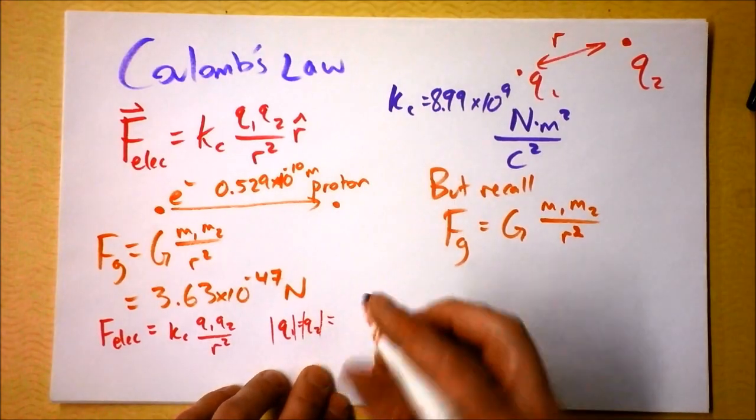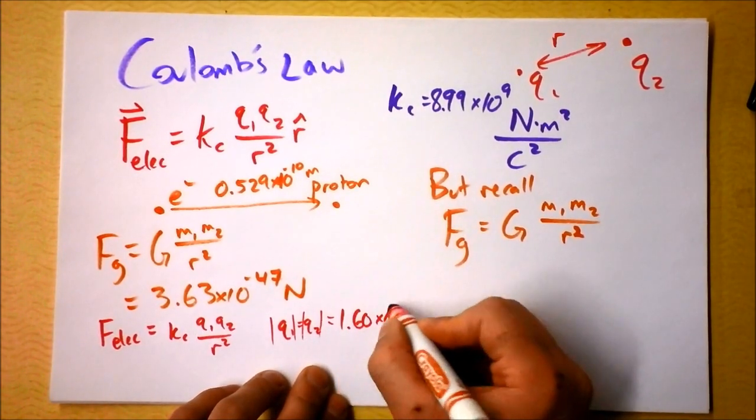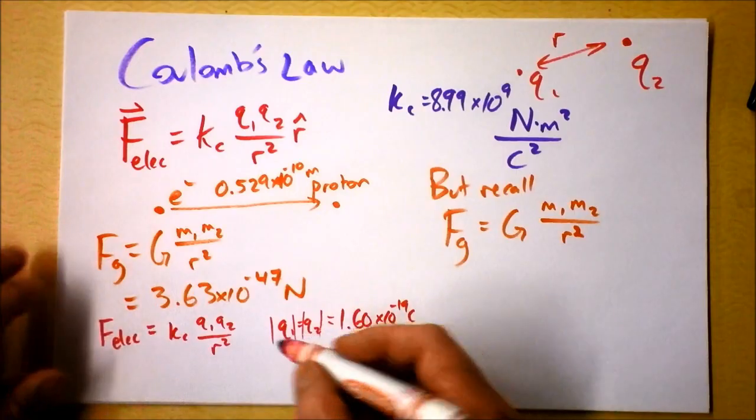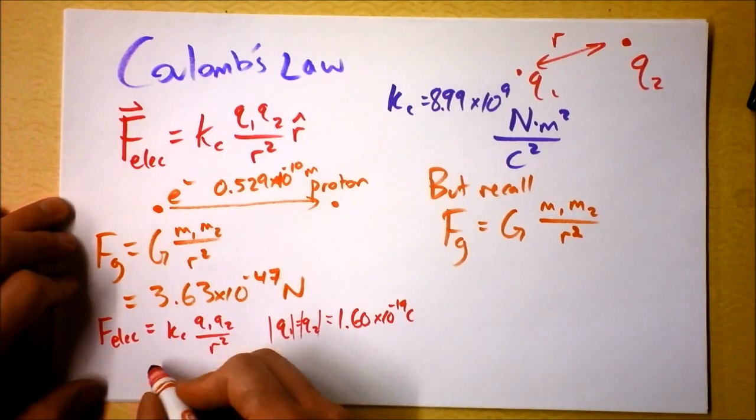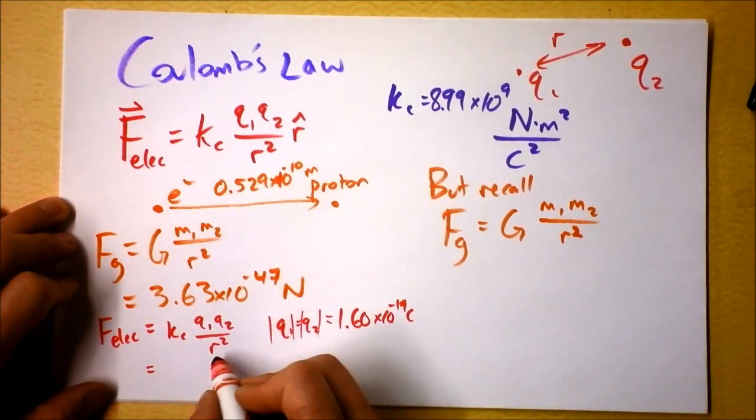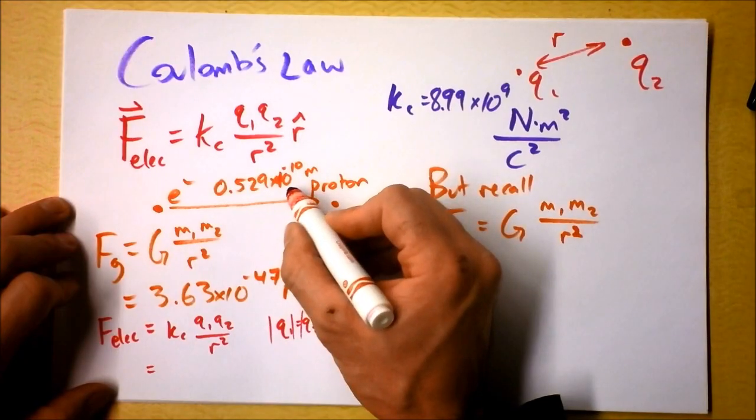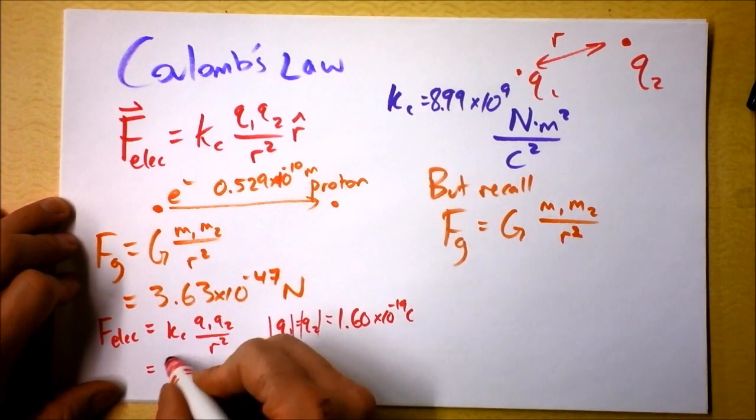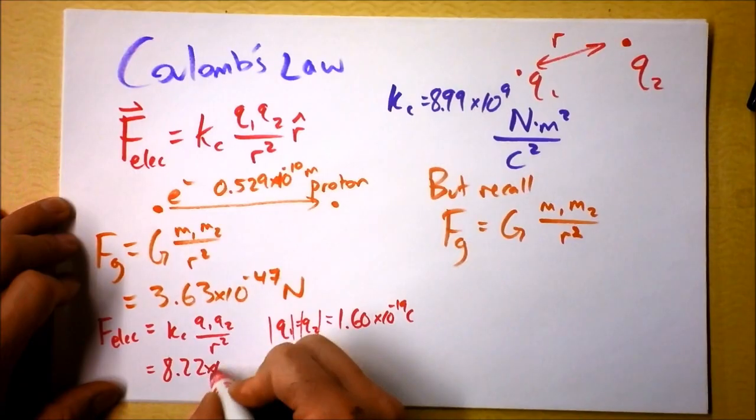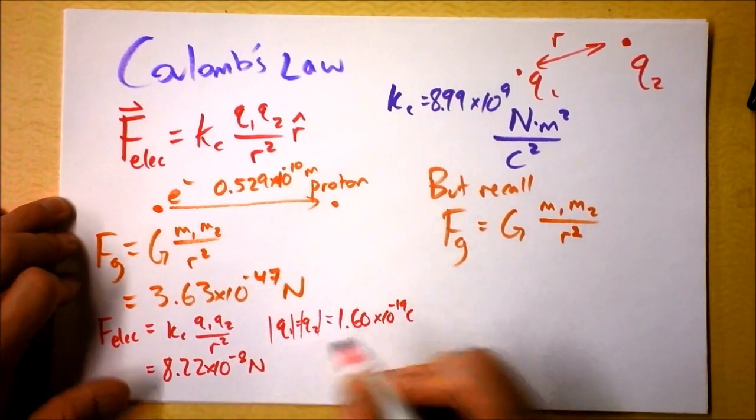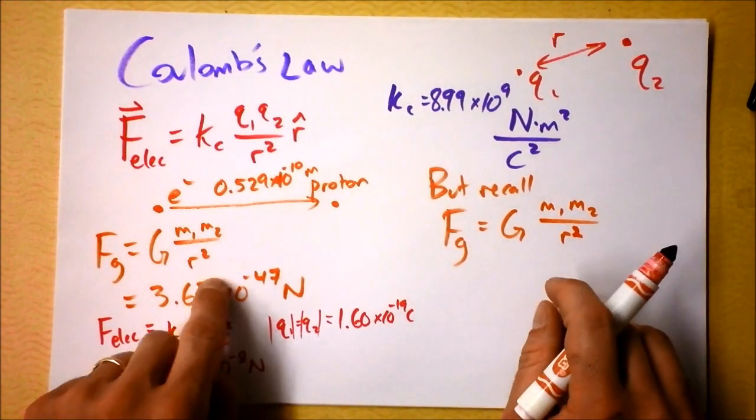1.60 times 10 to the negative 19th Coulombs. We plug those numbers in and we multiply by 8.99 times 10 to the 9th, and we divide by that distance, which is admittedly a small distance right there, squared, and we get 8.22 times 10 to the negative 8th Newtons. Now I want you to notice that this is a lot bigger than that.